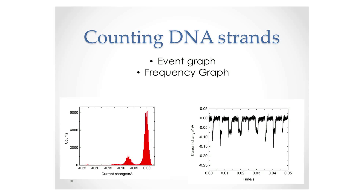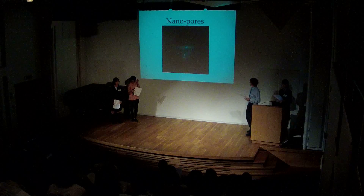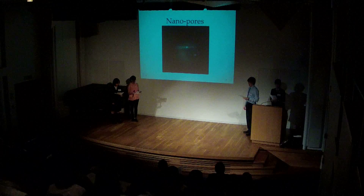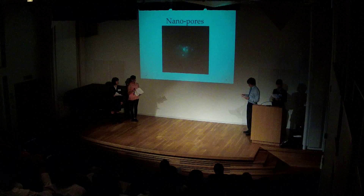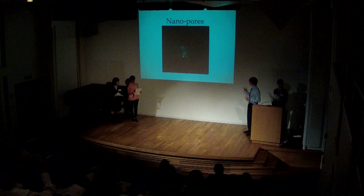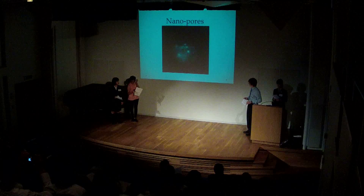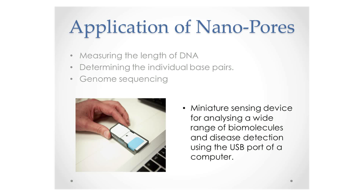One strand passing through is represented by the second spike and so on. Here is a video showing what happens as the negatively charged DNA is attracted towards the positive electrode through the glass nanopore. The DNA has been stained with a dye in order to be seen. Each DNA molecule is 48,000 base pairs long. This has been taken by a high resolution camera in real time. Nanopores have many uses including measuring the length of a DNA molecule, determining the identity of individual base pairs, and genome sequencing. Companies like Oxford Nanopore Technologies have created miniature sensing devices to analyse molecules.